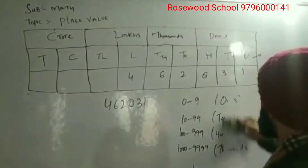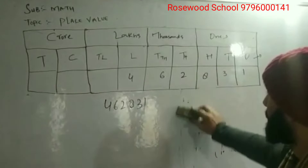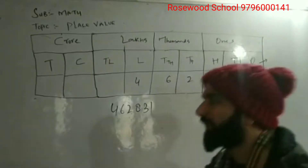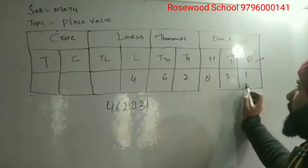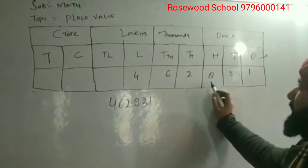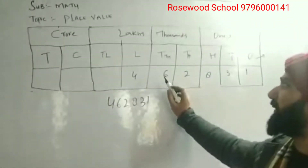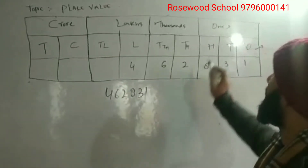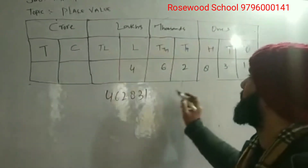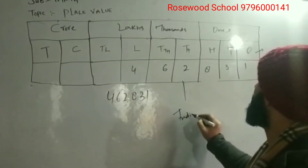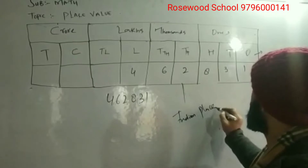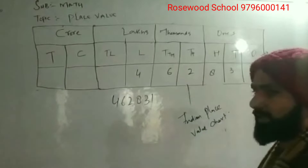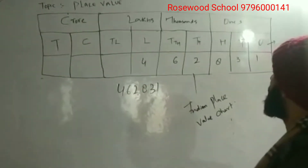So I just want to talk about the place values. You will put the numbers like this: 1 in the ones place, 3 in the tens place, 8 in the hundreds place, 2 in the thousands place, 6 in the ten-thousands place, and 4 in the lakhs place. This is called the Indian place value chart.